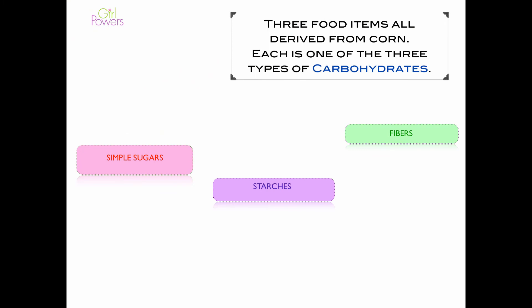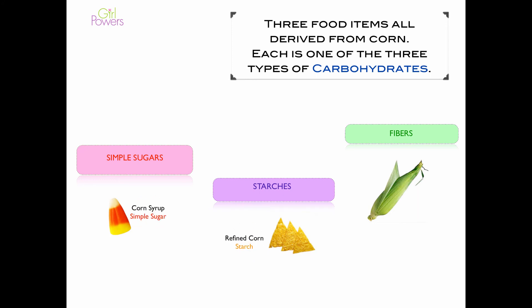Here are three food items all derived from corn, each representing one of the three types of carbohydrates. Candy corn, a simple sugar, is made from corn syrup. Corn chips represent starches, made from refined corn. And whole corn kernels represent fiber found in whole corn.